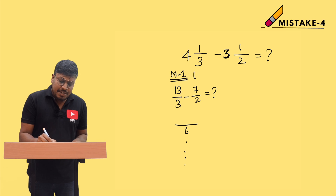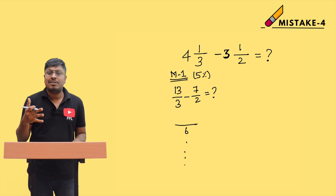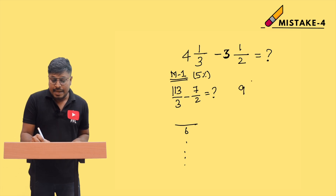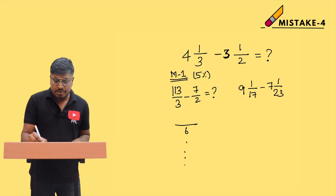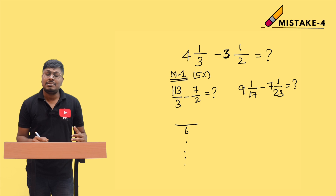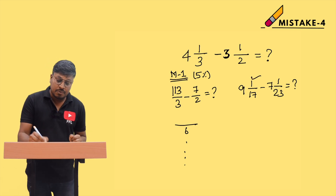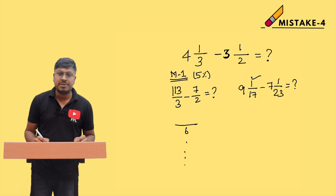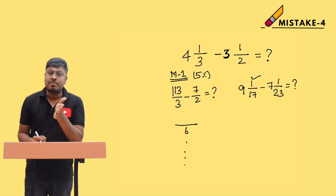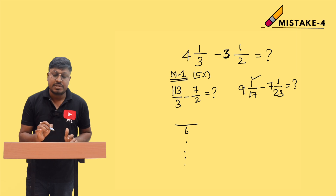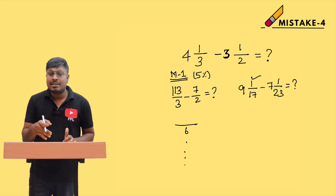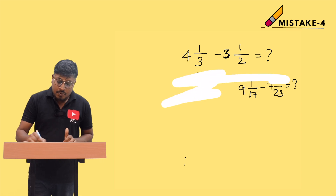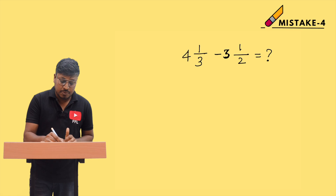Only 5% of students proceed with method 1. The problem is that if the numbers are large — for example, 9 and 1/17 minus 7 and 1/23 — taking the LCM and multiplying with the numerator is not easy at all. You could end up with numerators in the thousands. Students who have been studying for competitive exams for six months or more will not use method 1. That's where method 2 comes in.